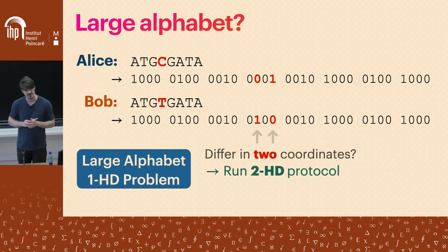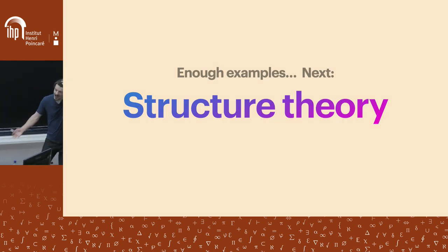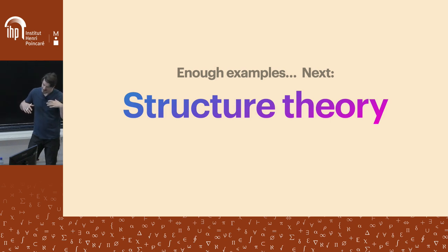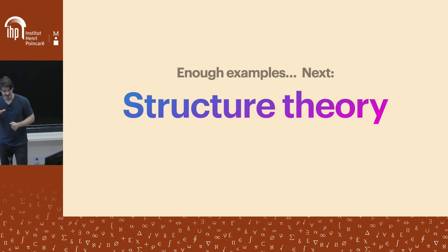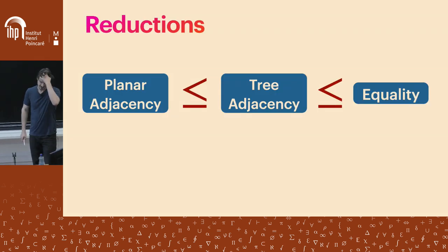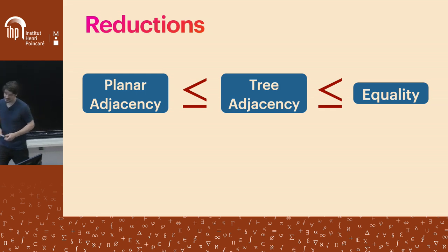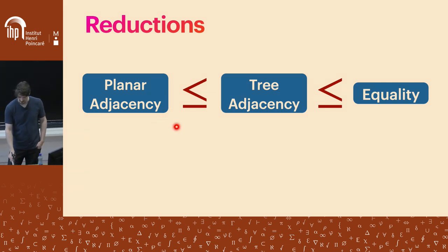Those are essentially the only problems we knew of with constant-cost communication protocols. I want to impose structure on this landscape of problems. As complexity theorists, we build classifications through reductions — and we can play this game in the world of constant-cost communication. We already saw how planar adjacency reduces to tree adjacency, which reduces to equality.